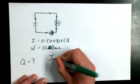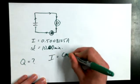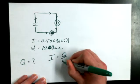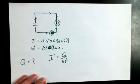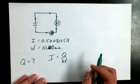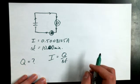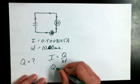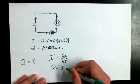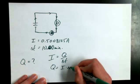We have the formula I equals Q over delta T. If I want to know how many coulombs Q went through this wire in a given time, given the current flow rate I, then Q equals I times delta T.